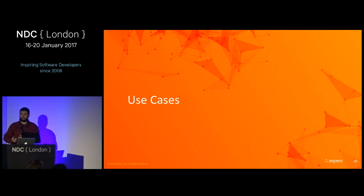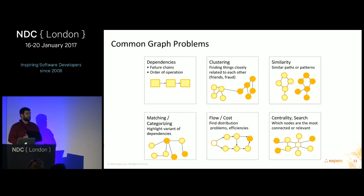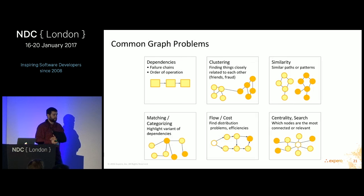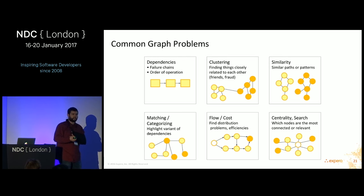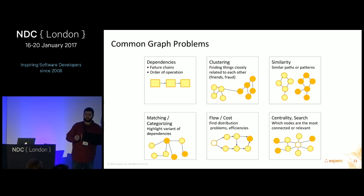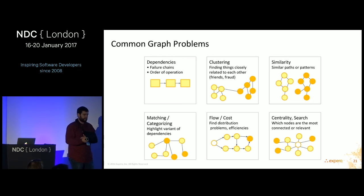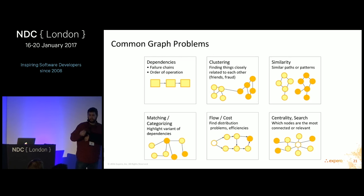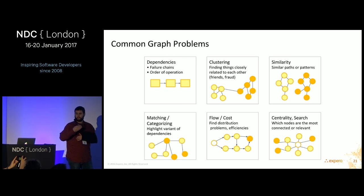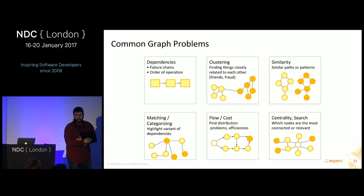Now let's talk about some use cases for graph databases. Common graph-type problems include dependencies, failure chains, and order of operations — often used for root cause analysis. For example, the Terraform and Consul talk about infrastructure — building a VPC before a subnet is a dependency graph problem. Clustering is another: finding things closely related to each other.